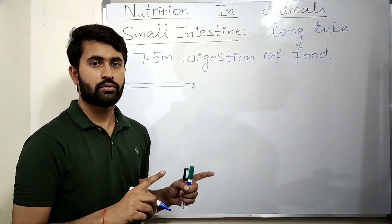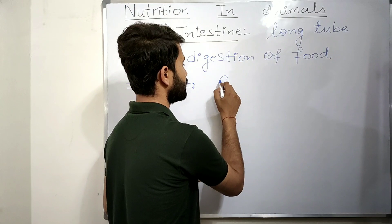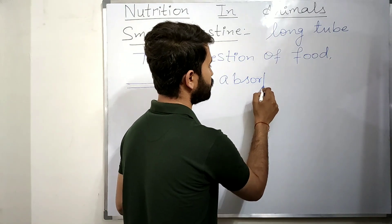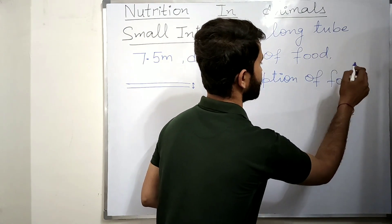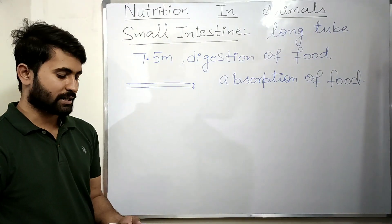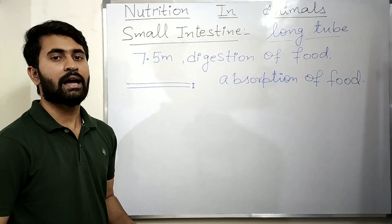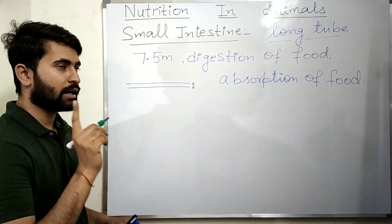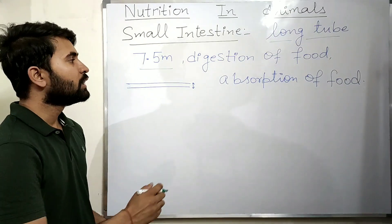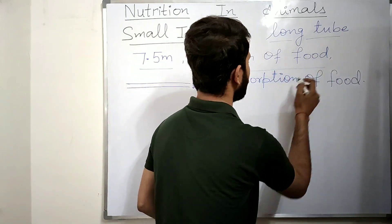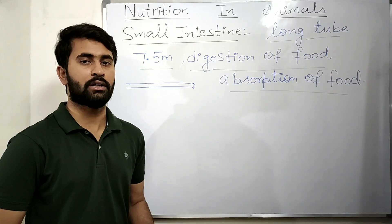The digestion of food mainly takes place in the small intestine. The absorption of food also takes place in the small intestine. So the small intestine is a long tube approximately 7.5 meters in length, and both digestion and absorption of food occur here.